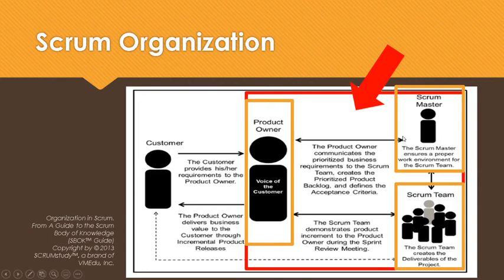Non-core roles are those which are not mandatorily required for the Scrum project and may include team members who are interested in the project. They have no formal role in the project team and may interface with the team, but are not responsible for the success of the project. Non-core roles should still be considered in any Scrum project.